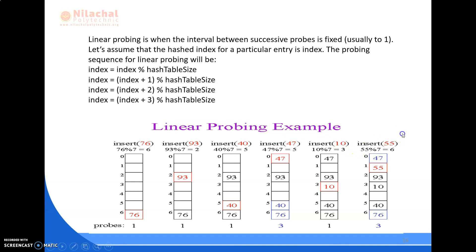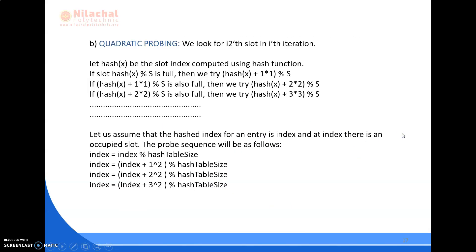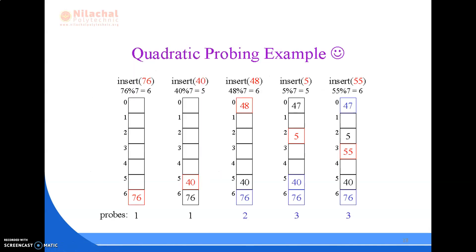Next is quadratic probing. In quadratic probing, the hash value x is added to a power-based formula: we try hash + 1², then hash + 2², then hash + 3², and so on. The index value is incremented by successive squares, so the index changes accordingly.